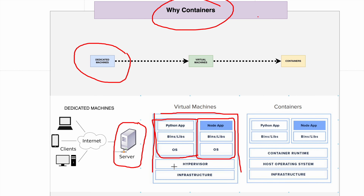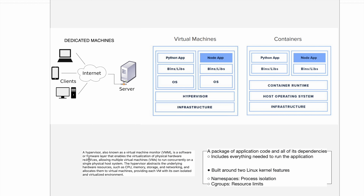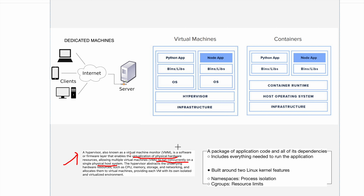In those multiple different OS instances you can have multiple applications with their own independent process boundaries. How you are able to have multiple different OS's installed on one host OS is done with the help of a hypervisor. A hypervisor, also called a virtual machine monitor, is a software or firmware layer that enables the virtualization of physical hardware resources.